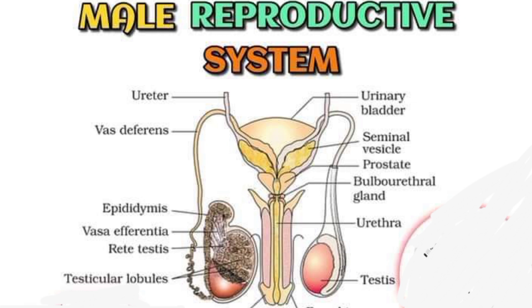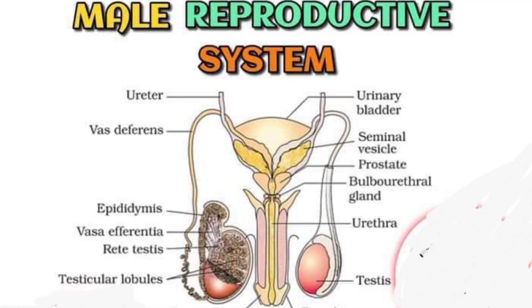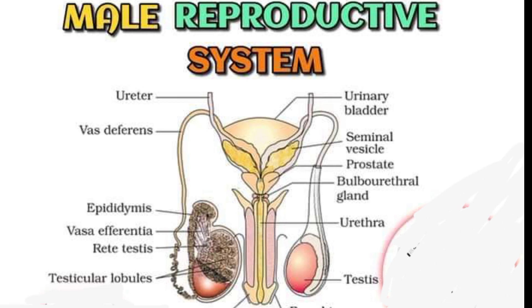Now you can see the seminal vesicles. These are pouch-like structures. The fluid within the seminal vesicles provides mobility to the sperm.